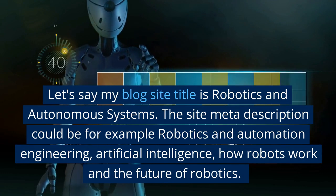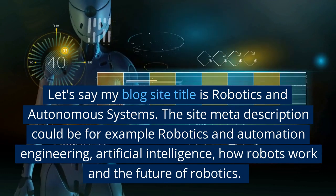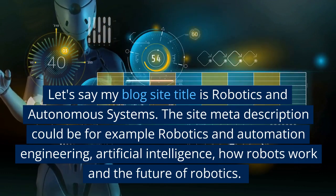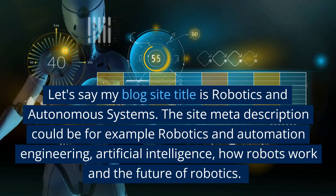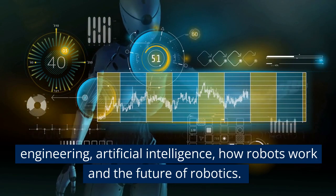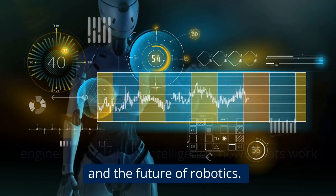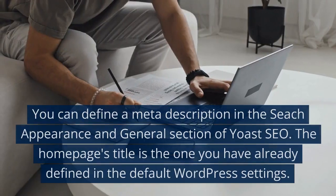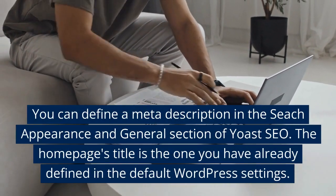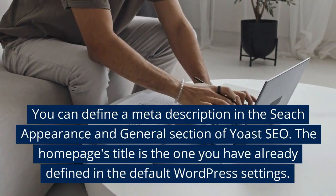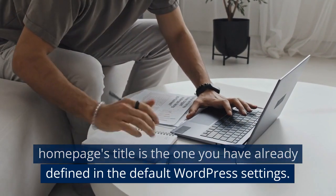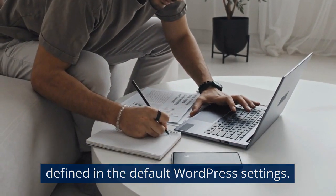Let's say my blog site title is Robotics and Autonomous Systems. The site meta description could be, for example, Robotics and Automation Engineering, Artificial Intelligence, How Robots Work, and the Future of Robotics. You can define a meta description in the Search Appearance and General section of Yoast SEO. The home page's title is the one you have already defined in the default WordPress settings.